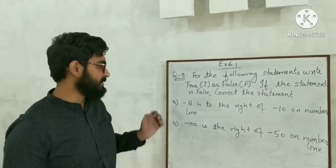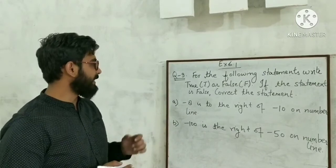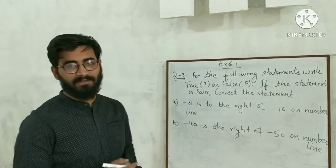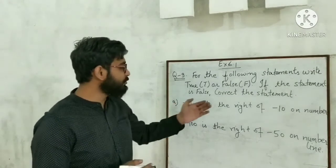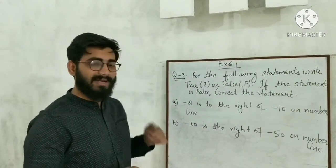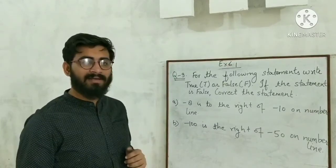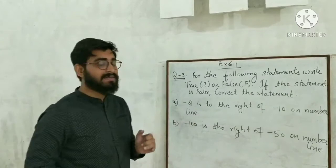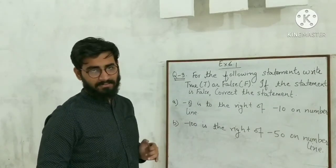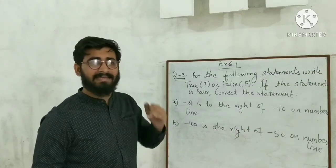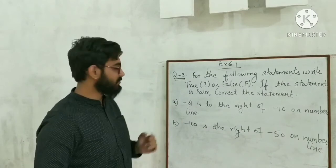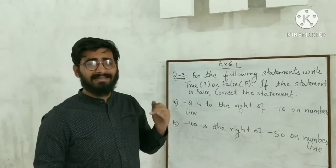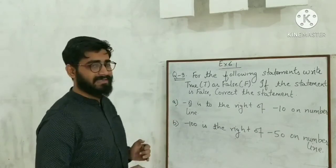Now let us do question 9: write true or false; if false, correct the statement. Part a: minus 8 is to the right of minus 10 on the number line. Out of minus 8 and minus 10, minus 8 is greater because it has less negative value. The number which is greater is always at the right side. So minus 8 will be on the right side of minus 10. This statement is true.